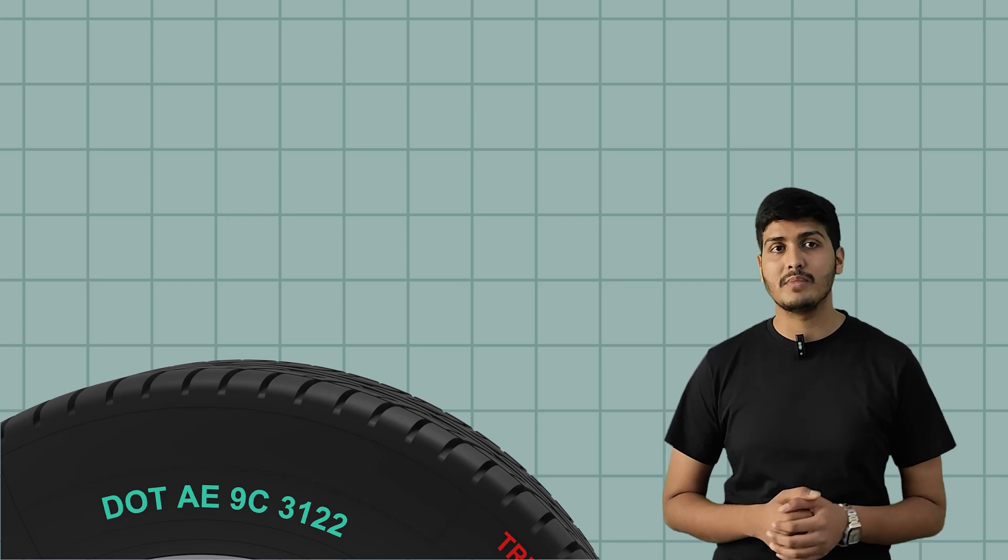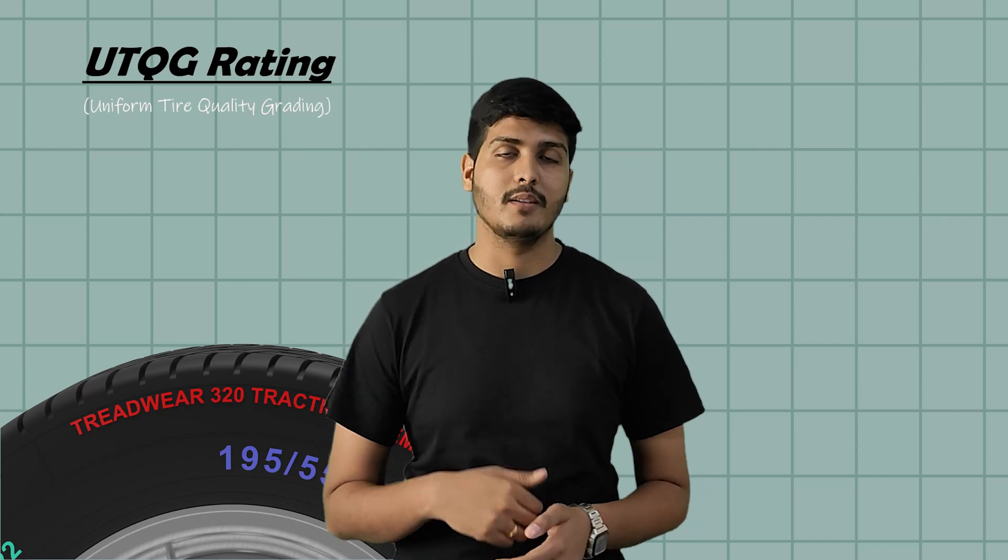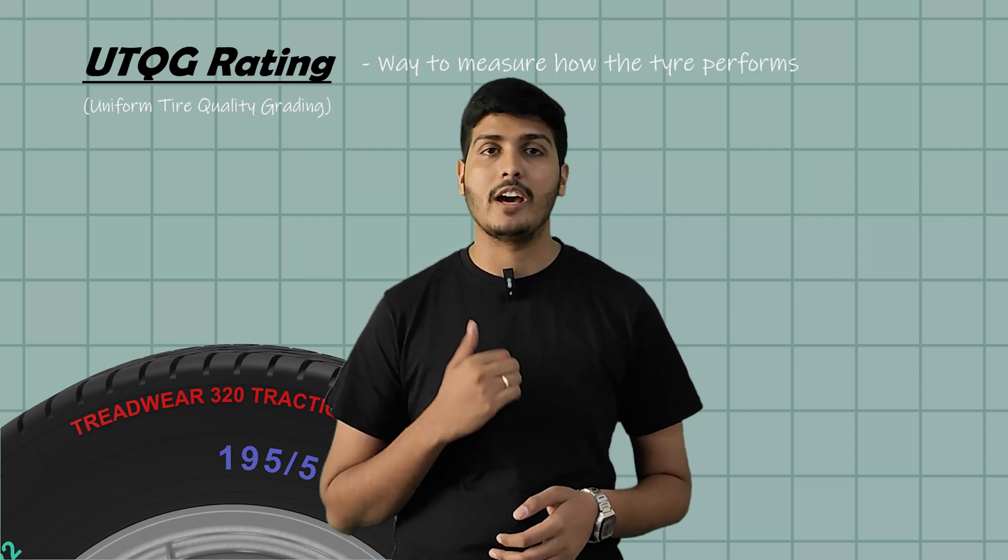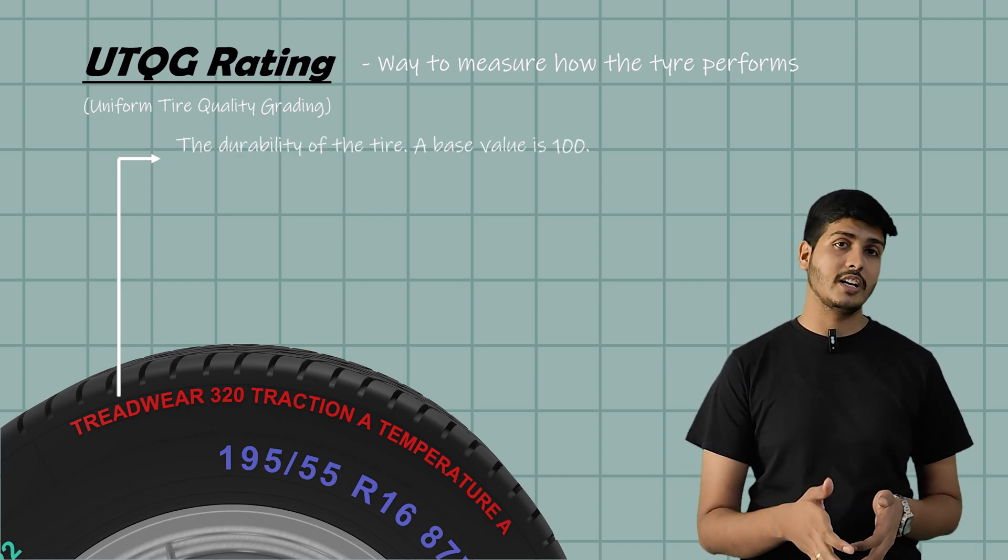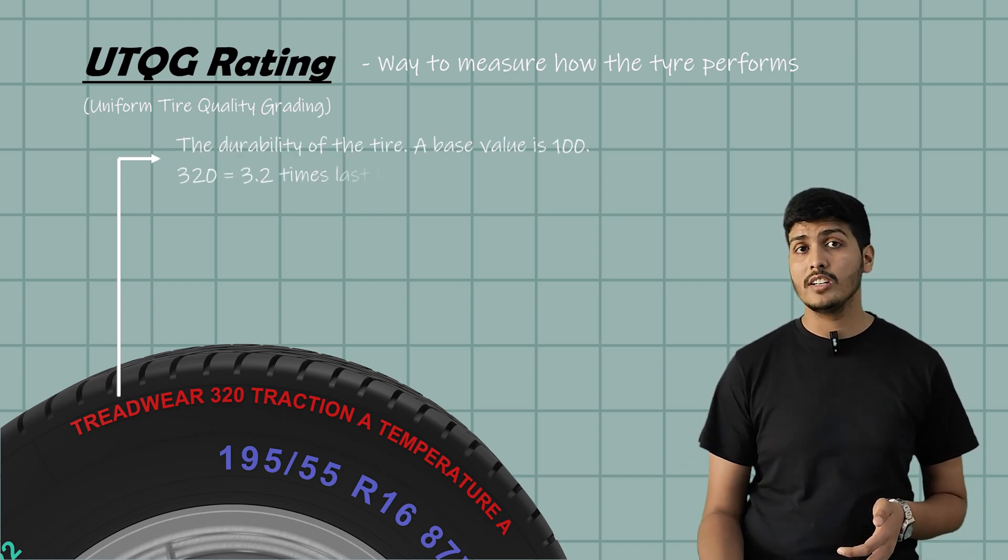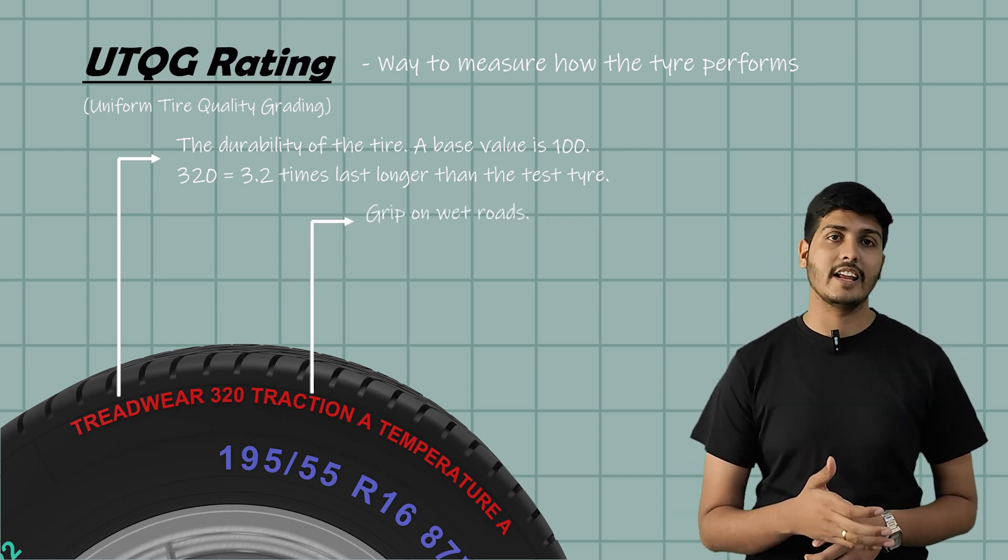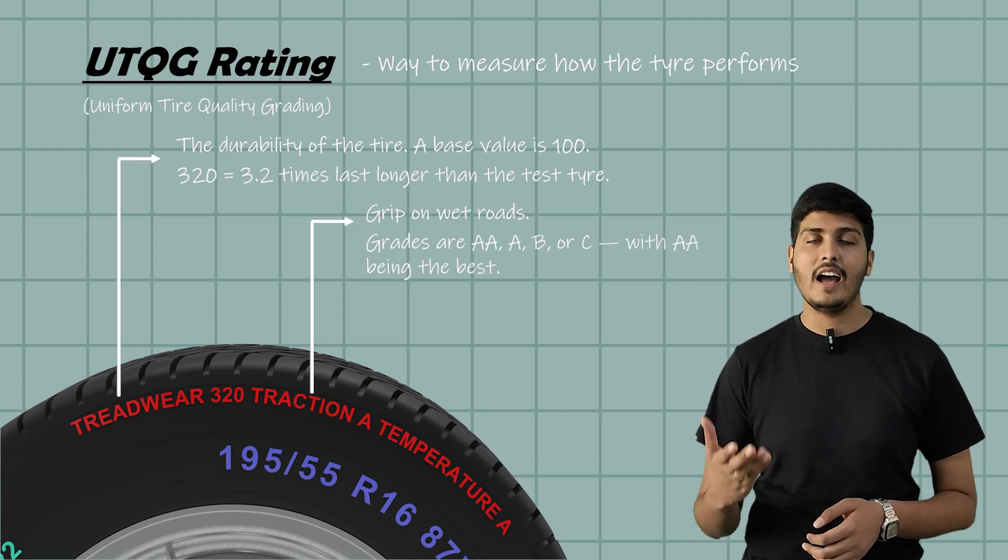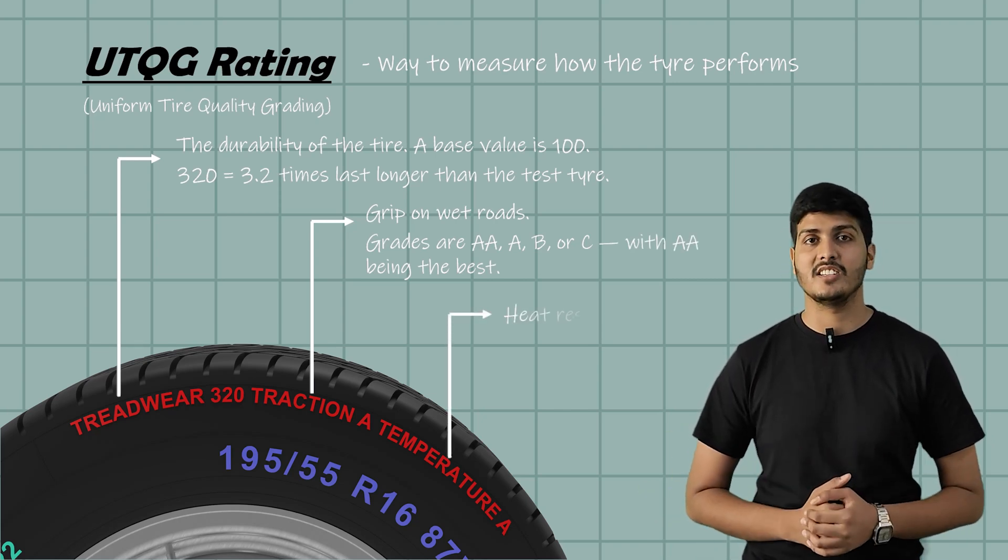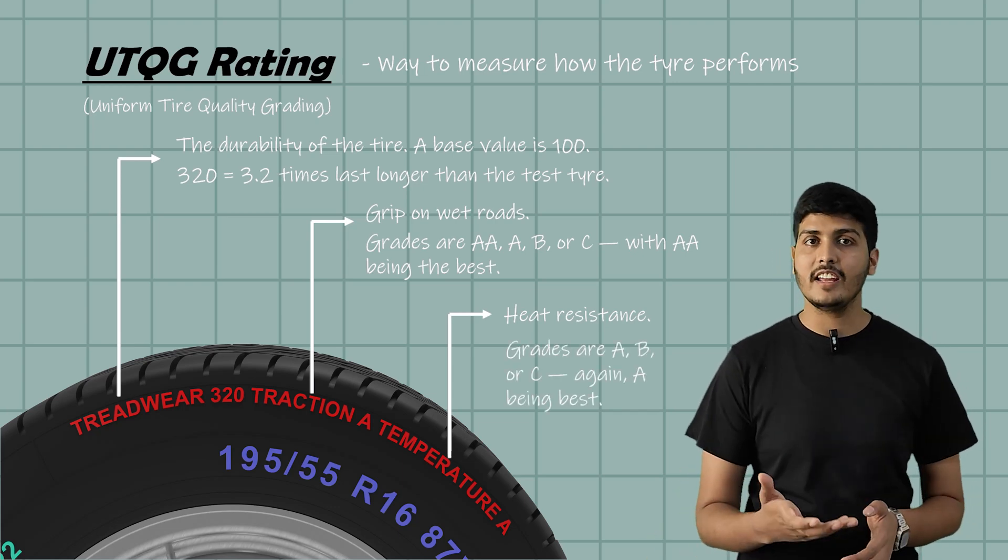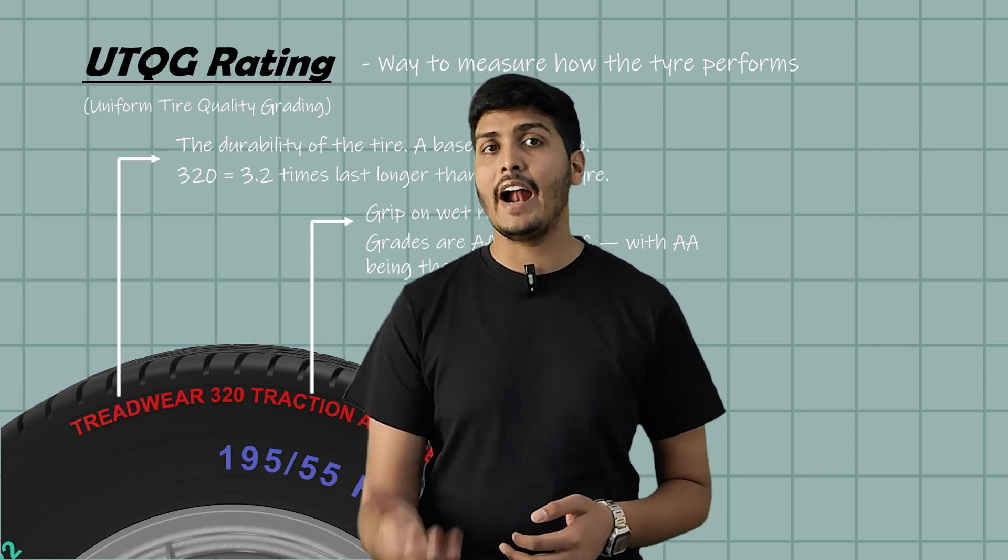Next up you might see something like Treadwear 320, Traction A and Temperature A. This is part of something called UTQG rating. Basically a way to measure how tire performs. Let's decode it. First is the Treadwear, the durability of the tire. The base value is 100 so 320 means the tire may last 3.2 times longer than the test tire. Second is Traction which measures grip on wet roads. Grades are AA, A, B and C where AA is the best. Next is Temperature which measures heat resistance. The grades are A, B and C. Again A is the best. This gives a quick idea of how well your tire will wear, grip and handle the heat under pressure.